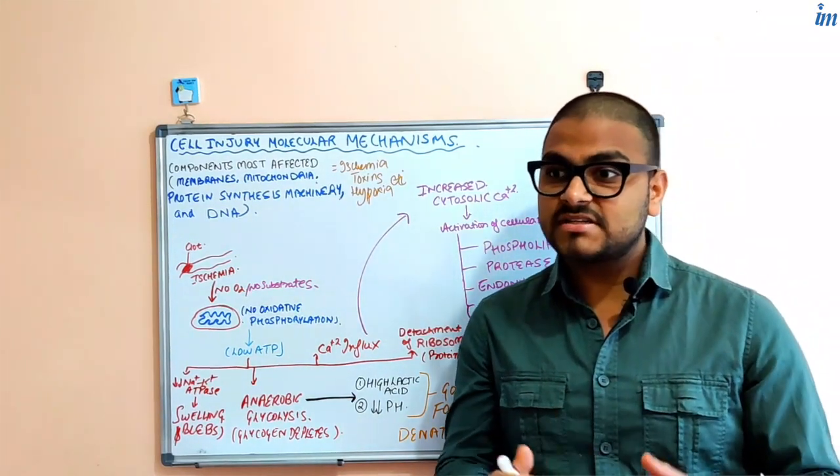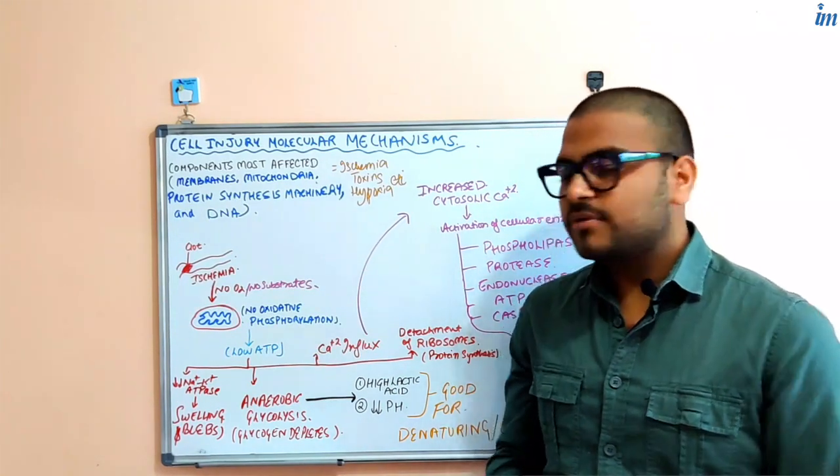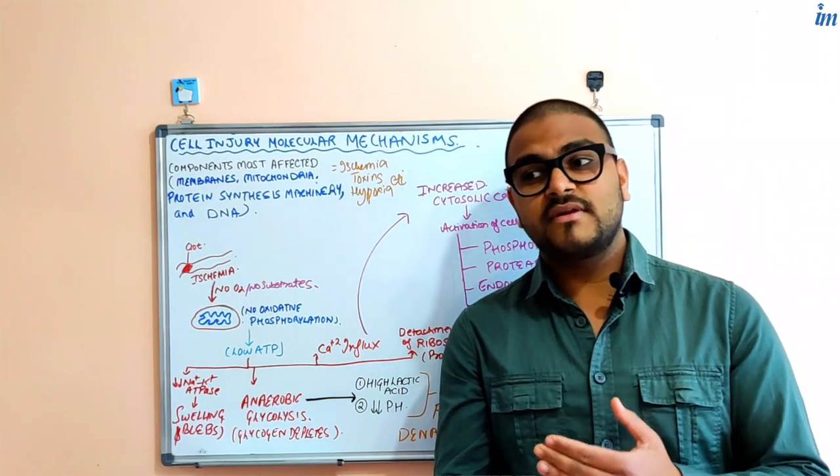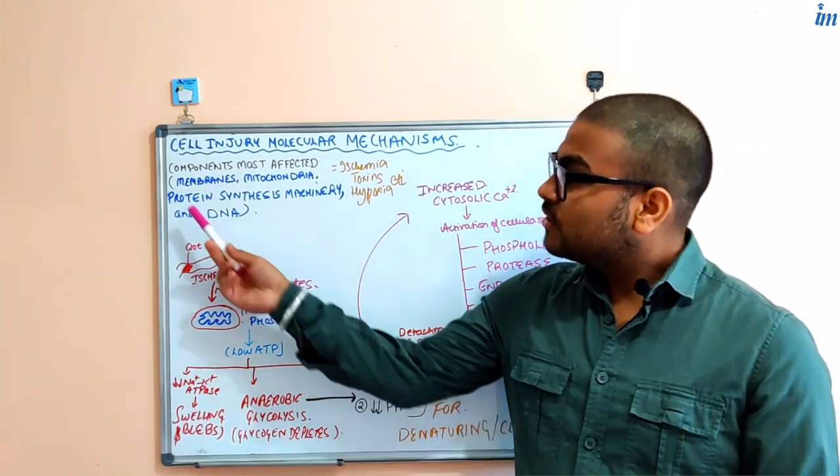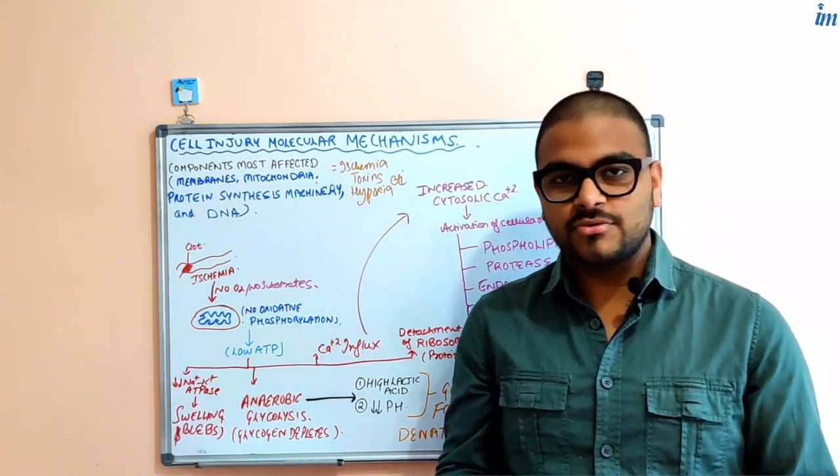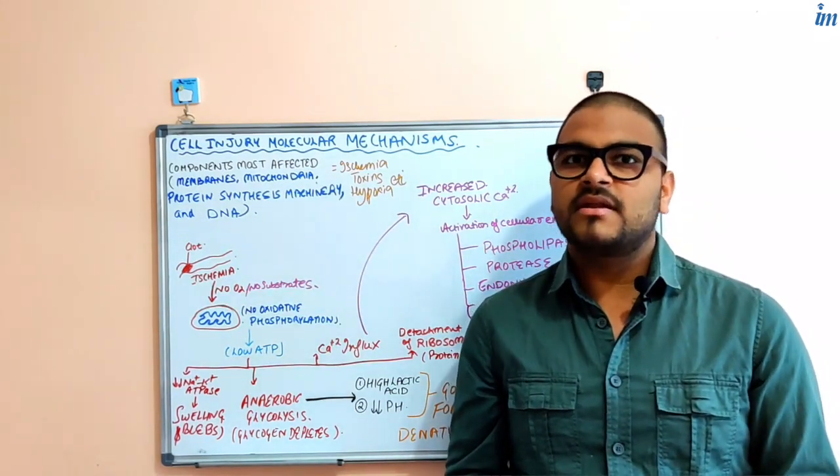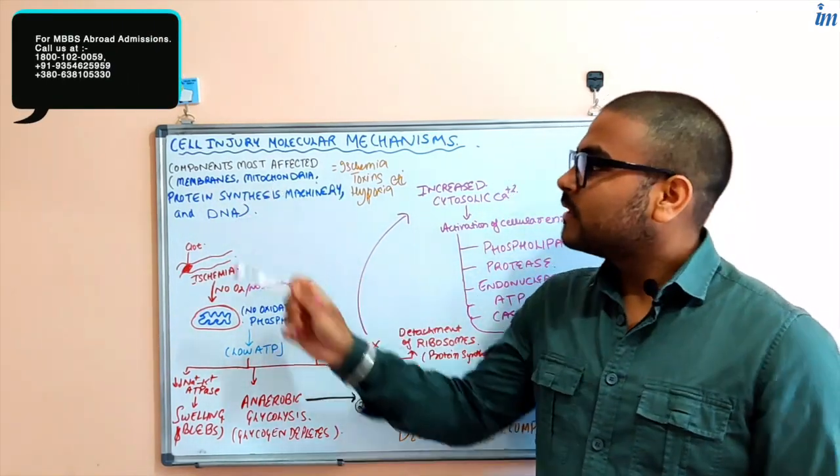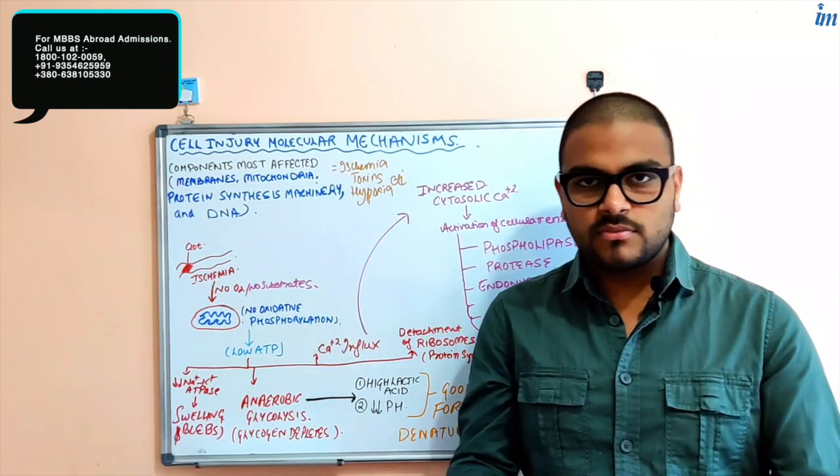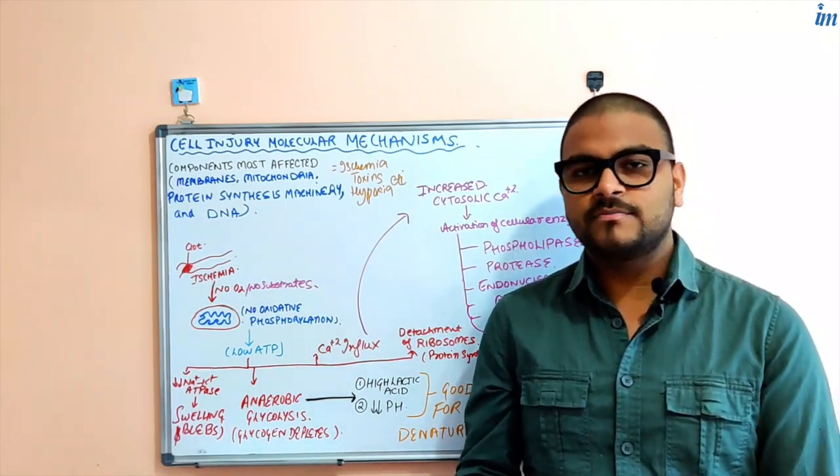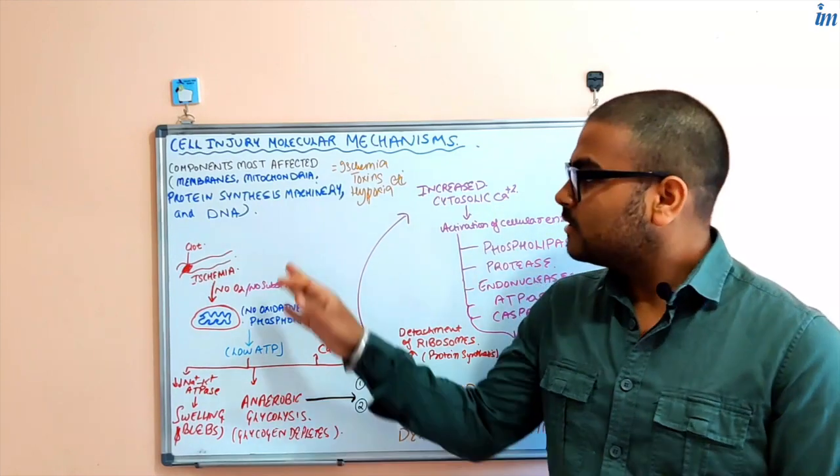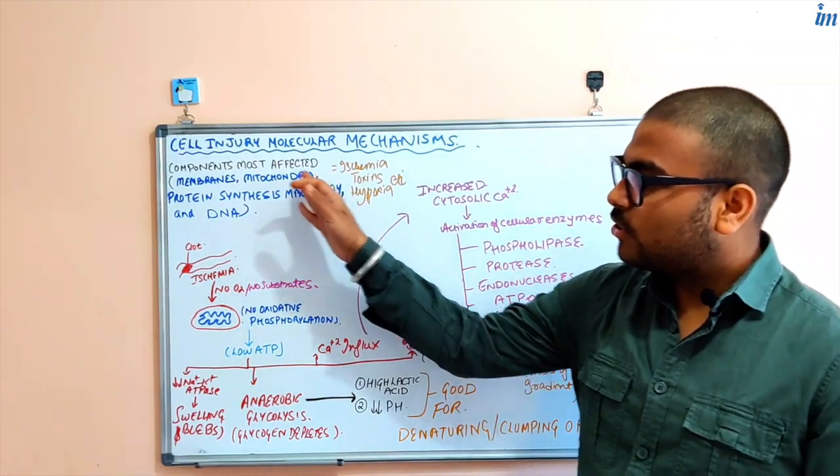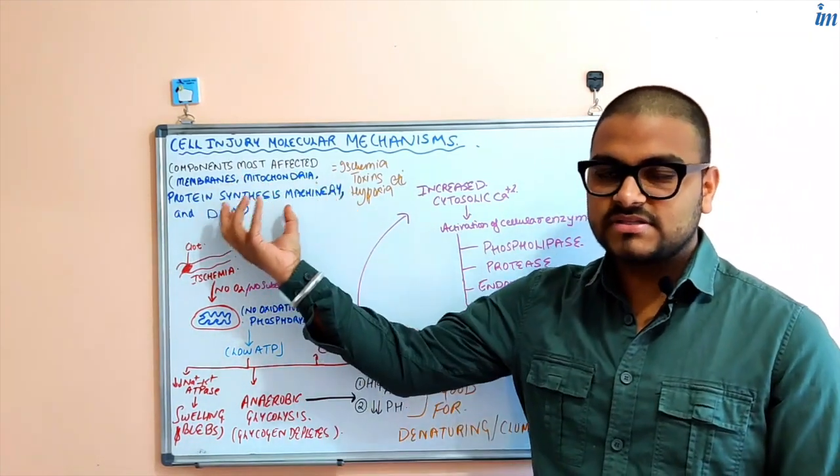So those components experience some changes. What are those components that experience the most stress, the most effects? We have membranes of the cell in general - whether plasma membrane, mitochondrial membrane, or lysosomal membranes. Mitochondria, protein synthesis machinery (RNA, ribosome, endoplasmic reticulum), and DNA. So any stress is going to affect all these systems, all these components of the cell.